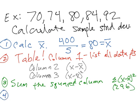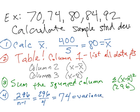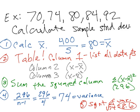Step four: we're working inside the formula now. The sample standard deviation formula is the square root of the sum of squares divided by N minus 1. We take 296 divided by N minus 1 — since our sample size is 5, that's 296 divided by 4, which equals 74. This value of 74 is actually the variance, because variance is the same formula without the square root.